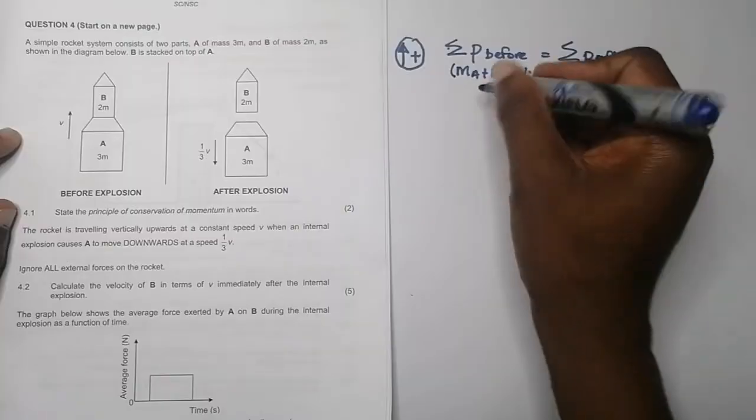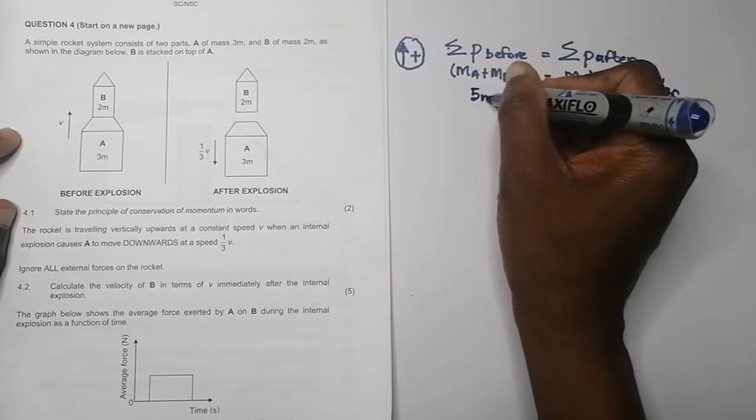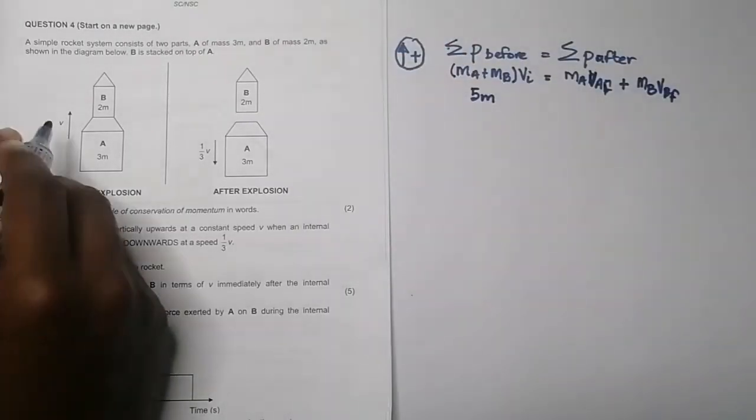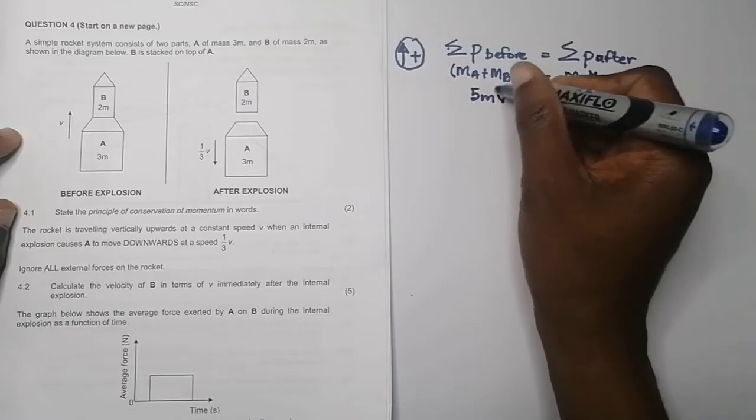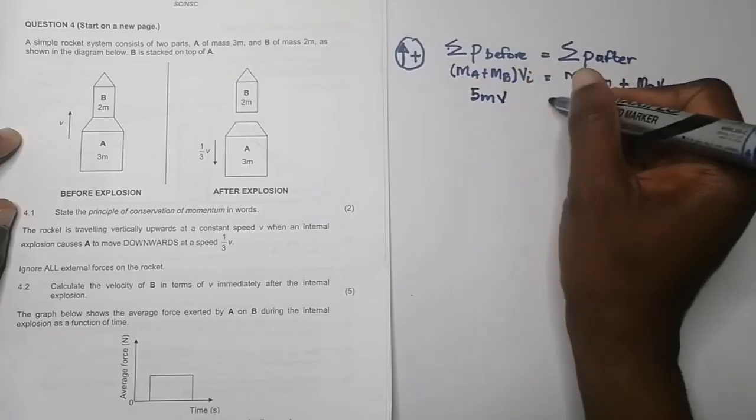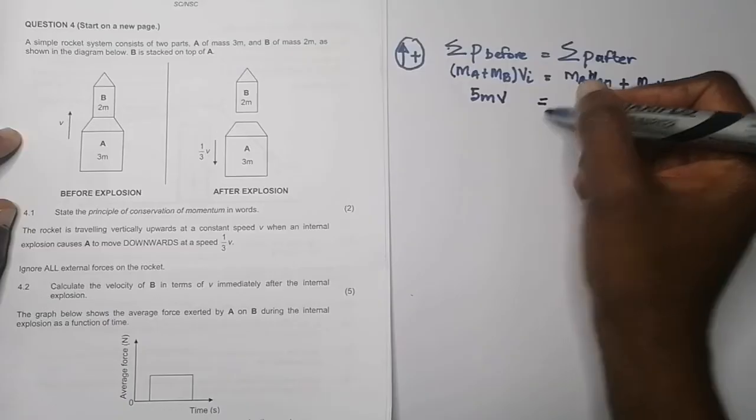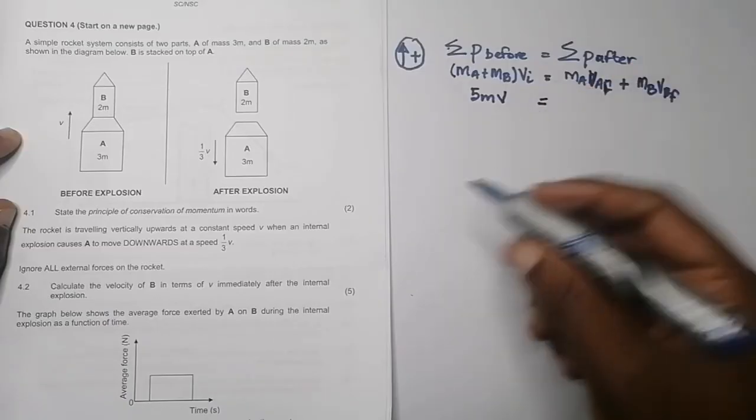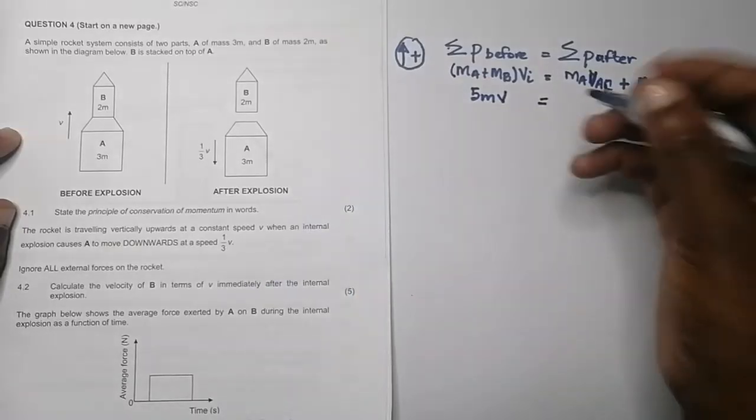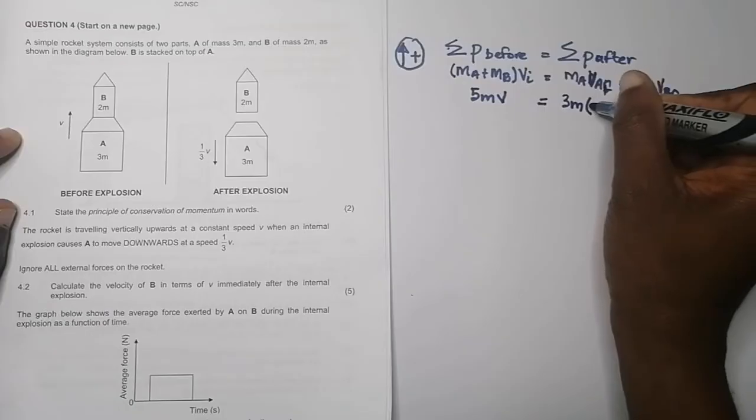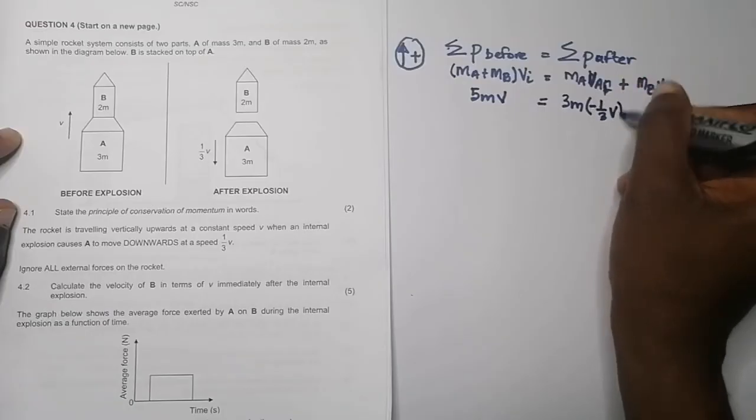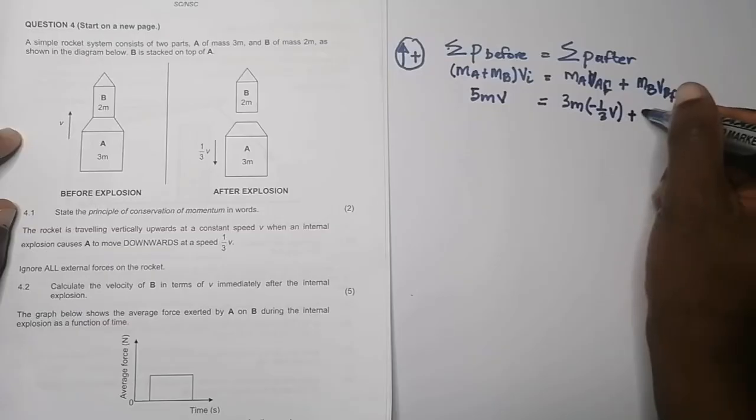After collision, mass A times velocity of A final, and then mass of B times velocity of B, also the final. I'm going to have 2m plus 3m, so this is going to be 5m, and the initial velocity there was v, so this is going to be 5m multiplied by a positive v, so that gives me a positive 5mv.